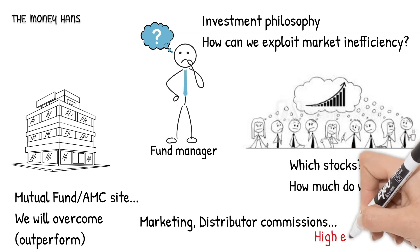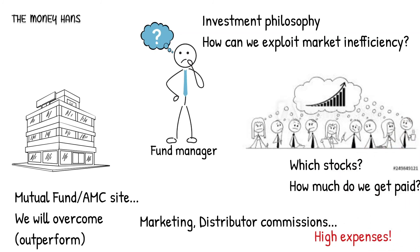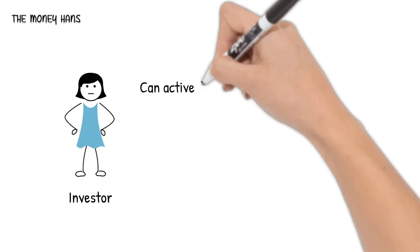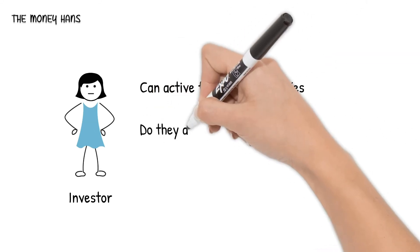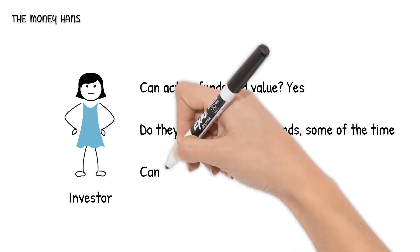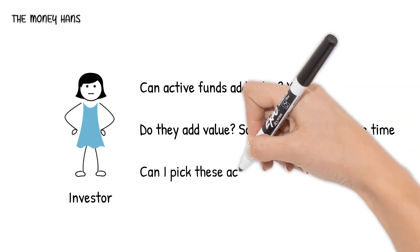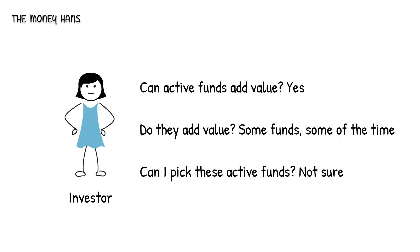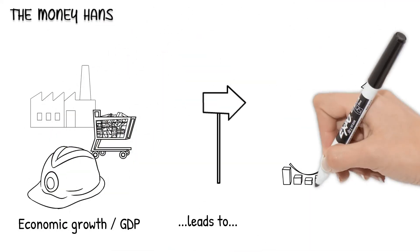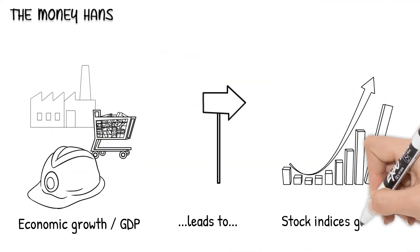These fees and expenses add up to a relatively high expense ratio built into the fund structure. As an investor, you have to study whether active funds can add value, when they do or don't add value, and whether you can pick these funds in advance.